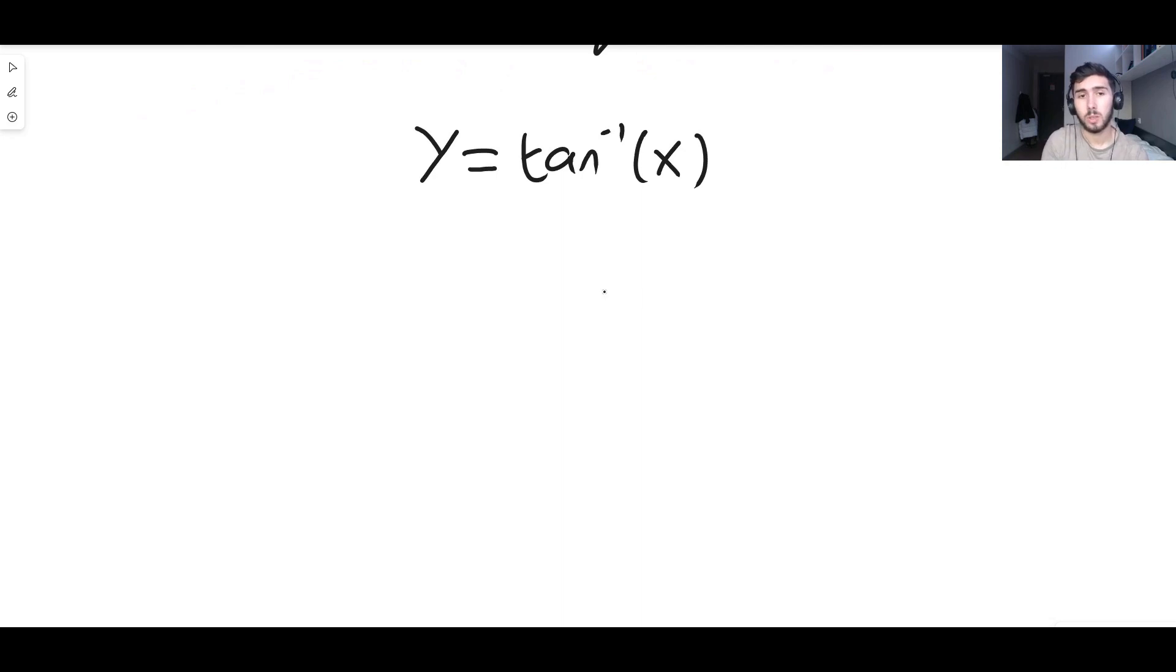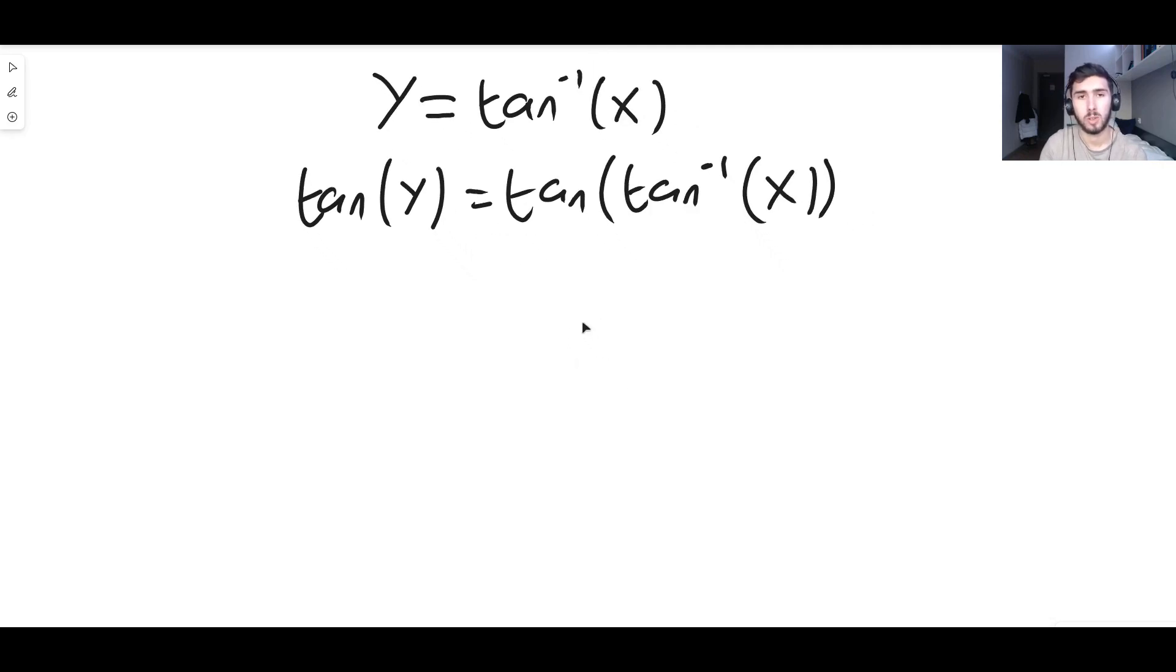Like always, we will take the inverse function of the arctan, because we don't know how to differentiate arctan right now. It's completely useless to try and explicitly differentiate right now. So let's take the tan on both sides to remove the arctan from the problem. We say tan(y) is equal to tan of inverse tan of x, simply taking the tan of both sides.